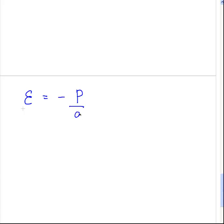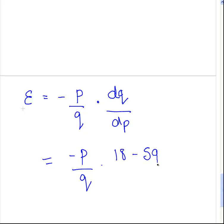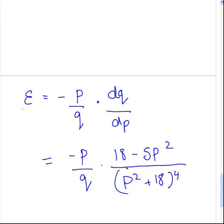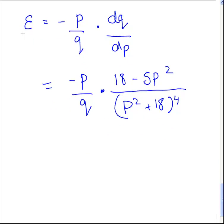So that's a lot of work done already. The price elasticity of demand is minus P over Q times dQ/dP. That is equal to minus P over Q times 18 minus 5P squared, over P squared plus 18 to the power of 4.